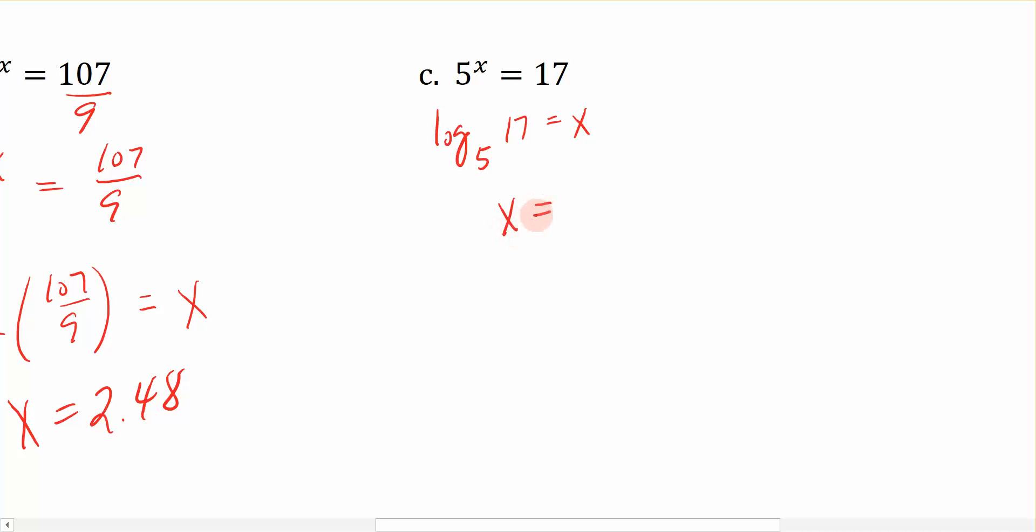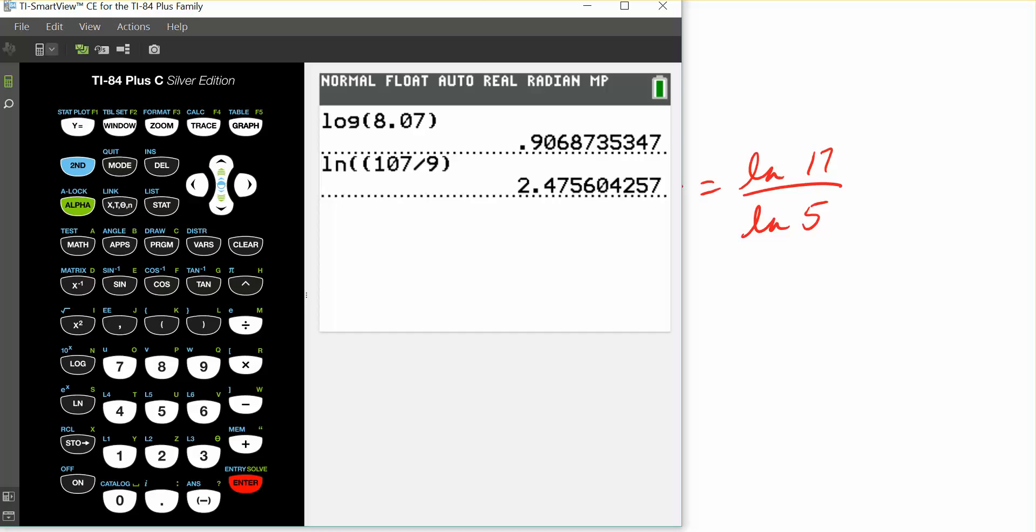The change of base formula says it's the log of the argument in the numerator divided by the log of the base in the denominator. I chose to take the log of the argument divided by the log of the base. Remember we could have taken the ln of the argument divided by the ln of the base. Either one works because I have both log and ln buttons on my calculator. Since I can see the ln on the side of my screen, that's the one I'm going to use.